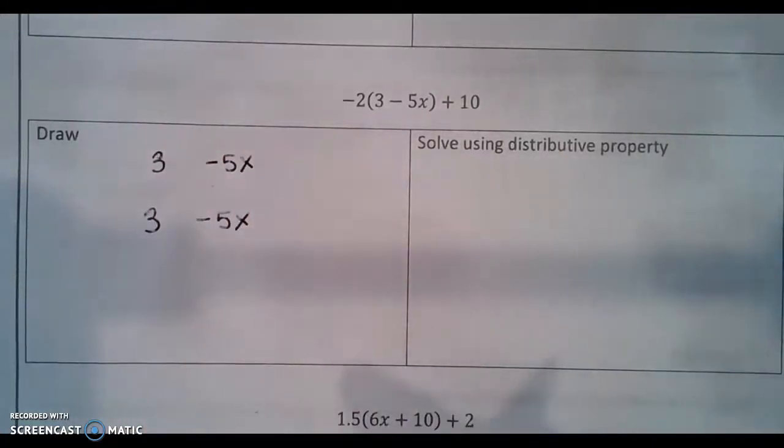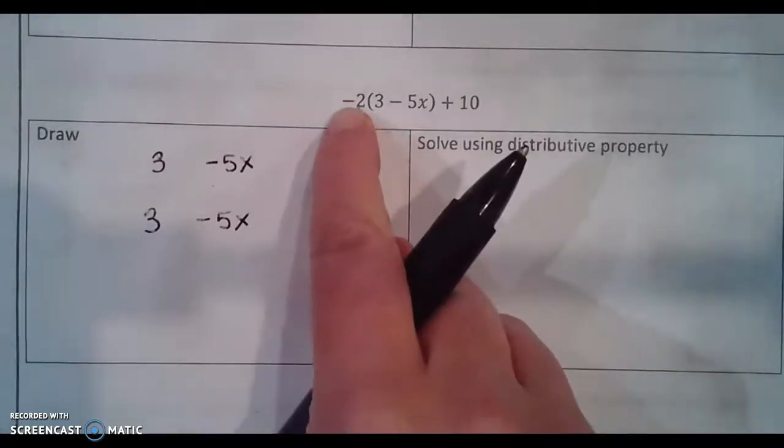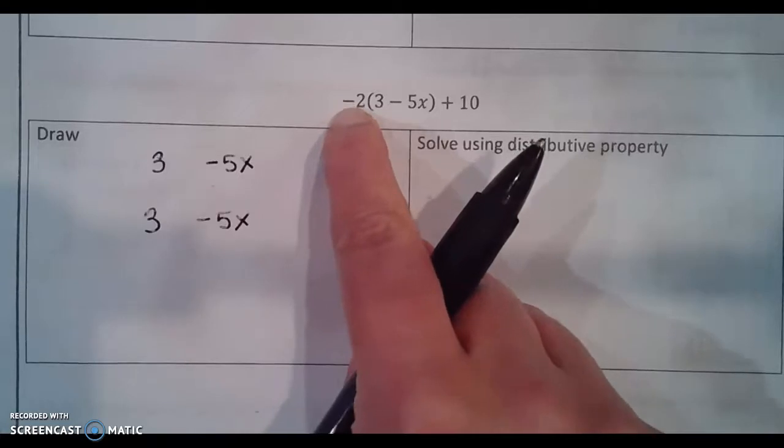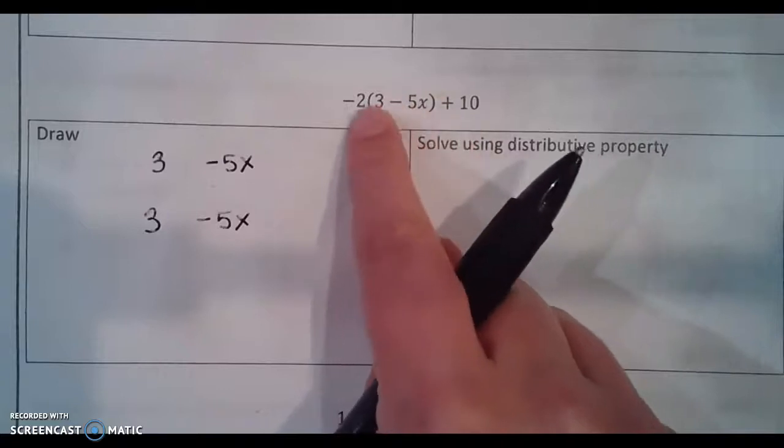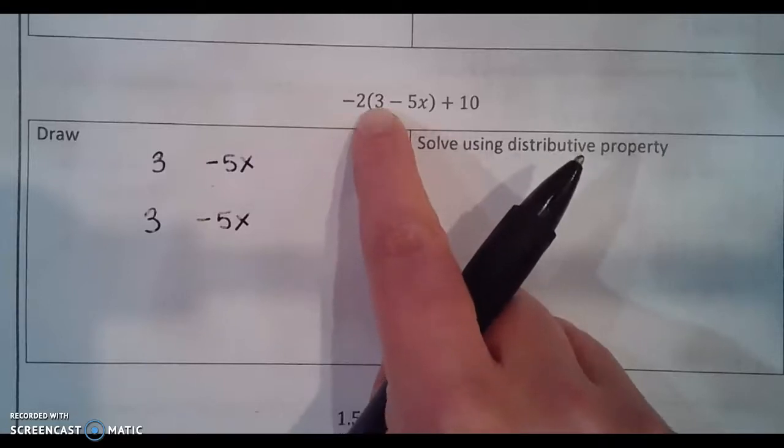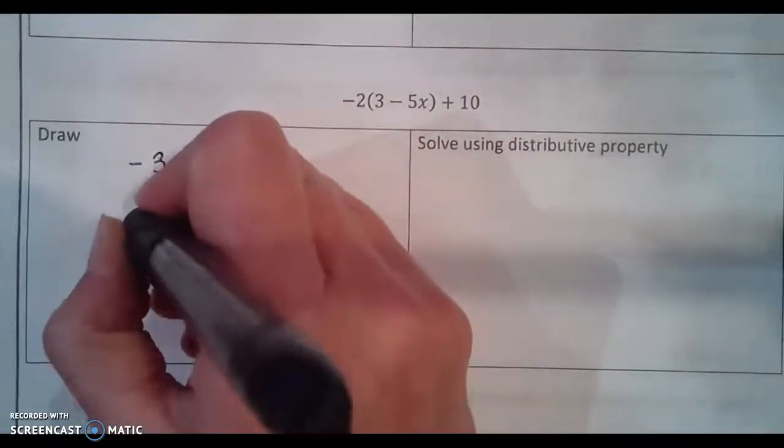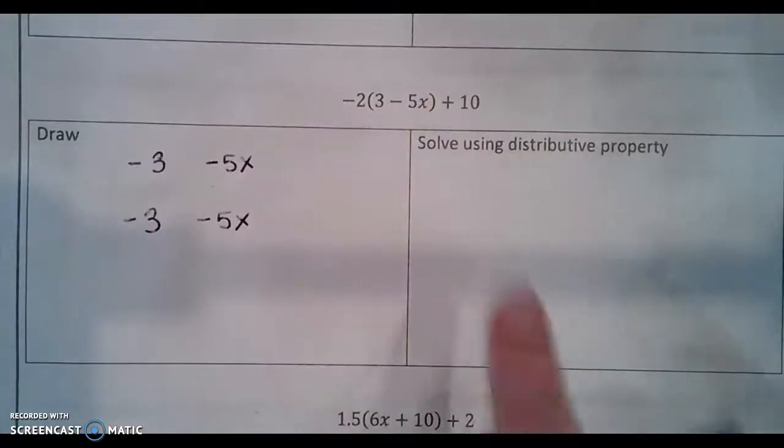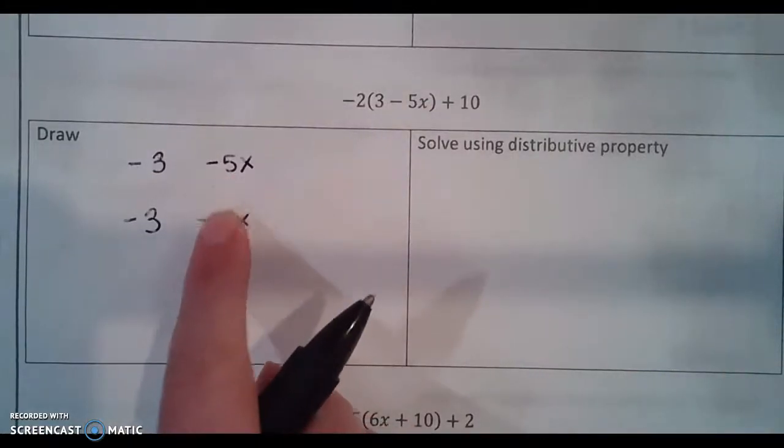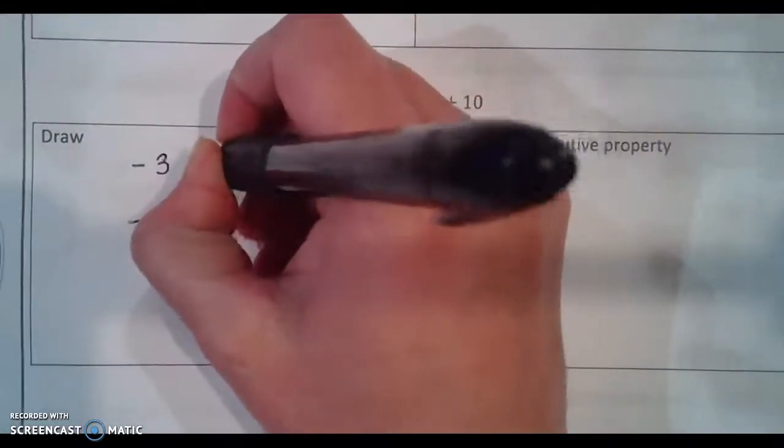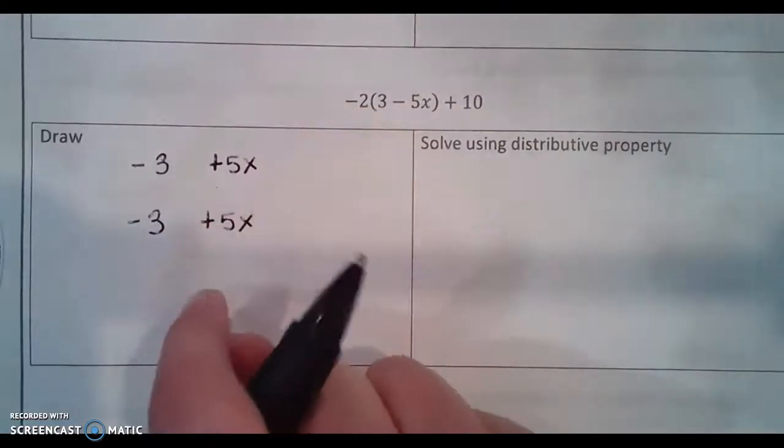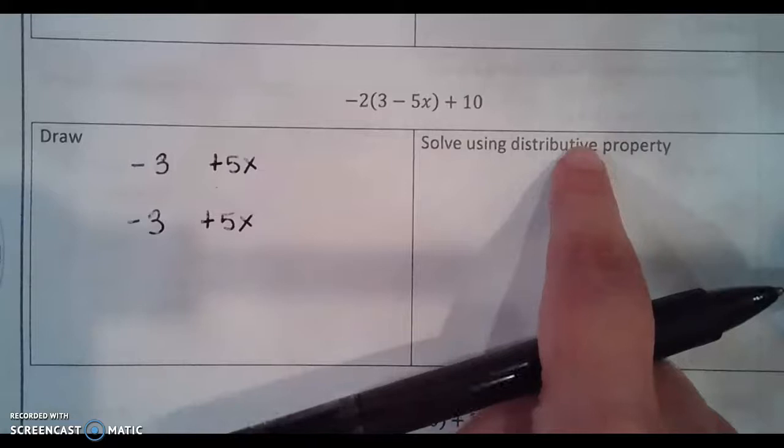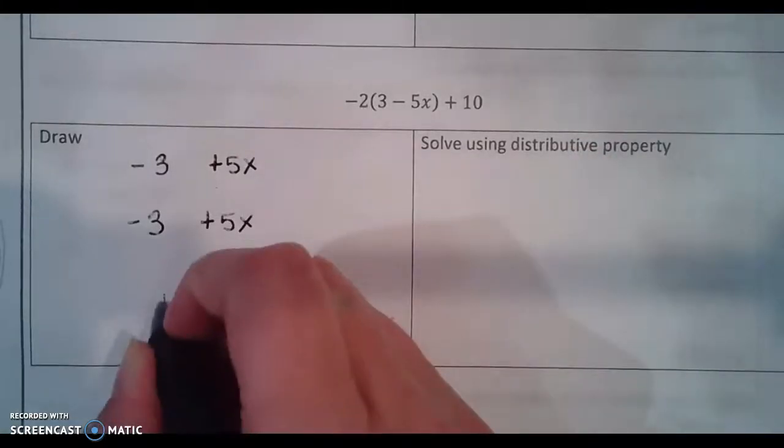So I'm going to put another 3 and another negative 5x. But you might notice something very important. There is a negative sign in front of our two. And so what this means is that everything inside the parentheses is going to become the opposite. So this 3 can't just be a 3. It has to be negative 3. Write that down. And this negative 5 can't just be a negative 5. It has to change to a positive 5. Because this negative tells us that we'll have the opposite. This 10 is outside of the parentheses. So that stands alone.